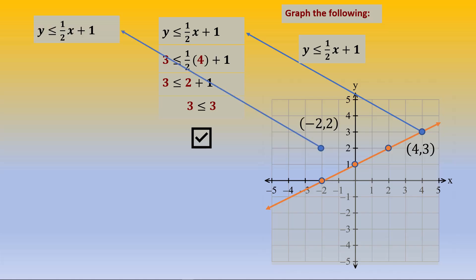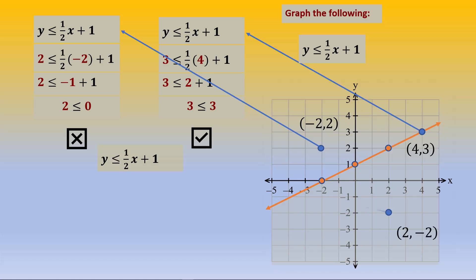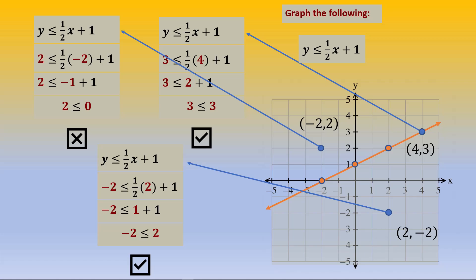Let's try another point. Negative 2, 2 is outside of the shaded region, so this should not work. If we plug it through and get the final answer, we get 2 less than or equal to 0. That is not a correct statement, so this is not a point that solves the inequality. Another point that's inside the shaded region, 2, negative 2, should work. We plug it in and work it through, and we get negative 2 less than or equal to 2. This is a correct statement, so this point is in the solution set for this inequality.